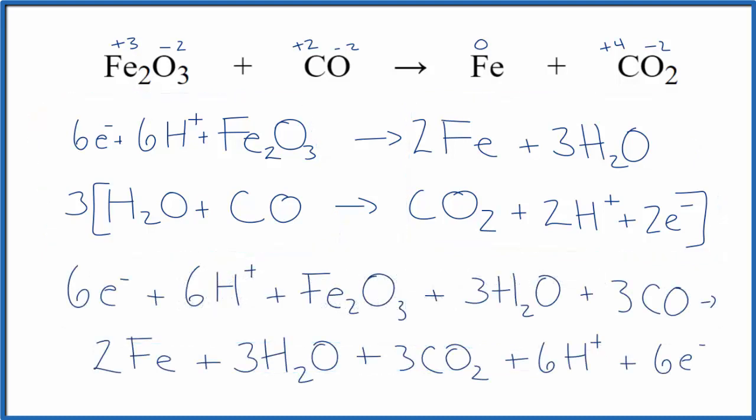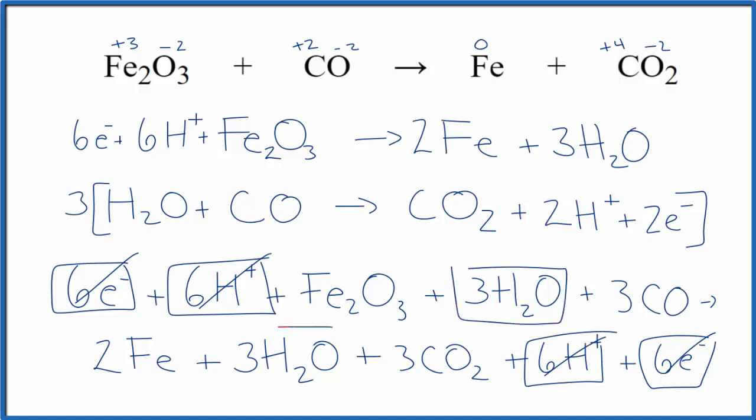When we do that, this is what we end up with. At this point, we have our reactants here and our products here. Now we're going to simplify. I can see in the reactants, I have 6 electrons. In the products, 6 electrons. Those we can get rid of. 6 hydrogen ions, 6 hydrogen ions, simplify that. 3 water molecules and then 3 water molecules, simplify that. And what's left, that's the balanced redox equation for Fe2O3 plus CO yields Fe plus CO2. I'll clean this up and we'll have our balanced redox reaction.